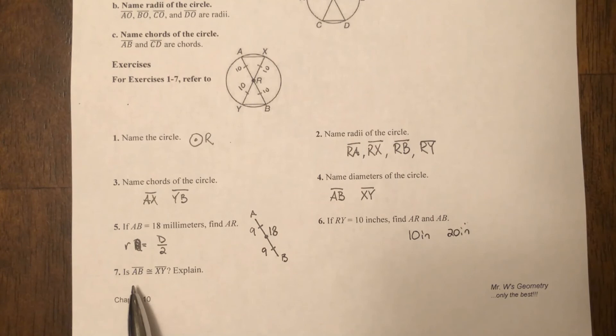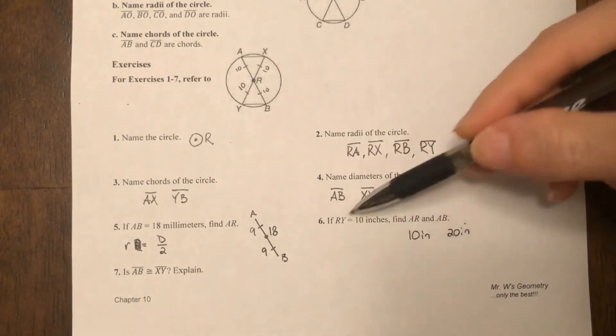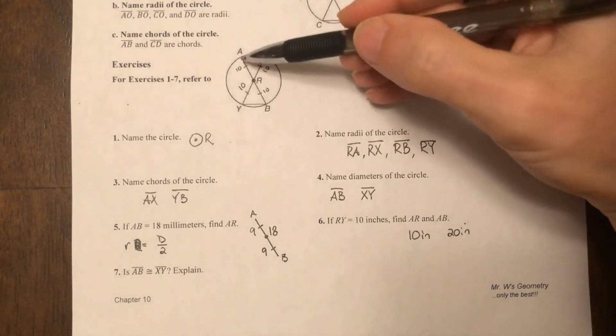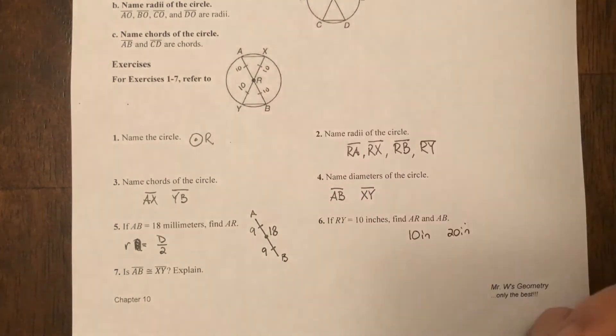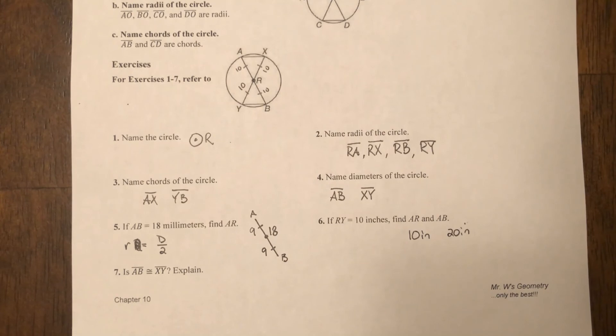All right, next thing. Is AB congruent to XY? Absolutely. We just kind of talked about it when we explained this problem. AB is a diameter, XY is a diameter. If you had the same exact circle, any diameters that you draw in that circle, they're all going to be congruent.